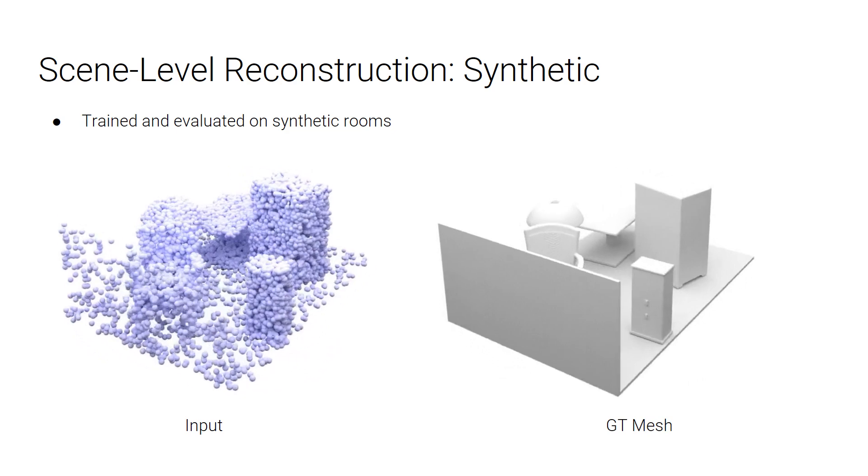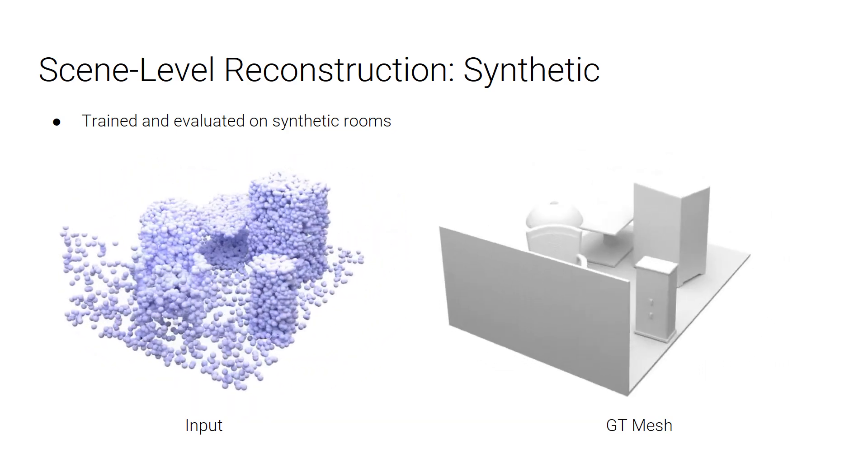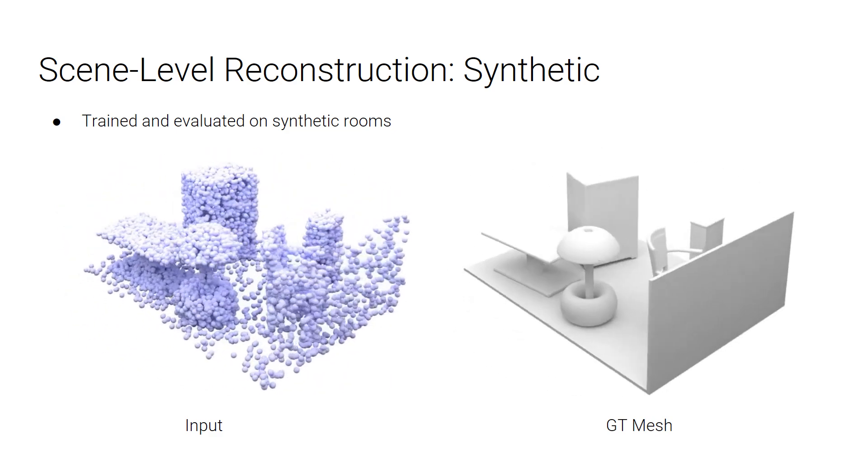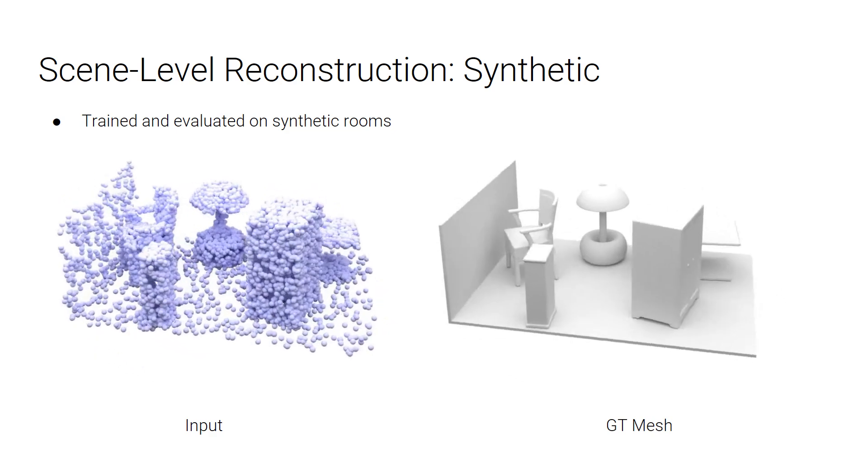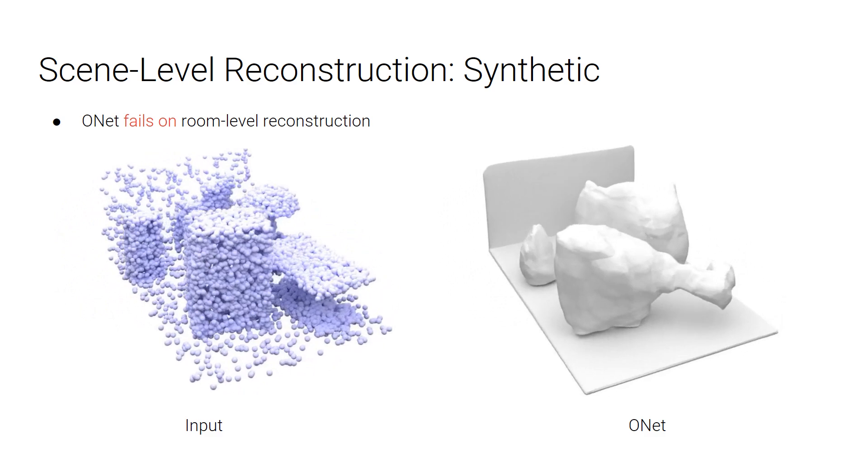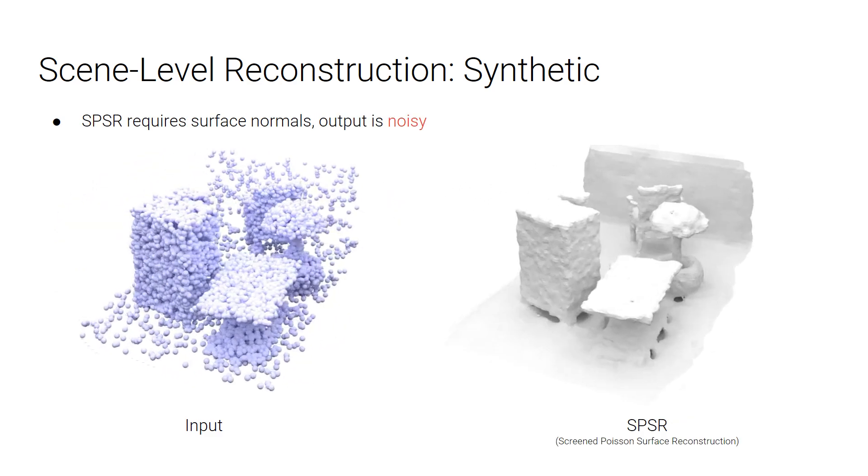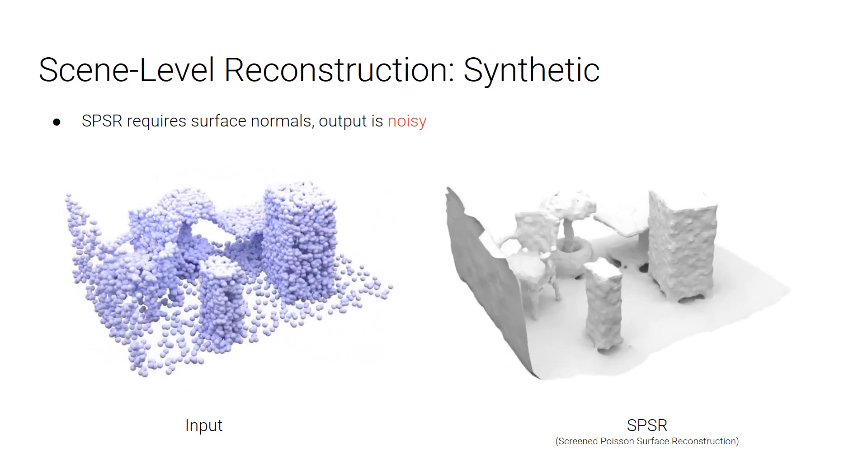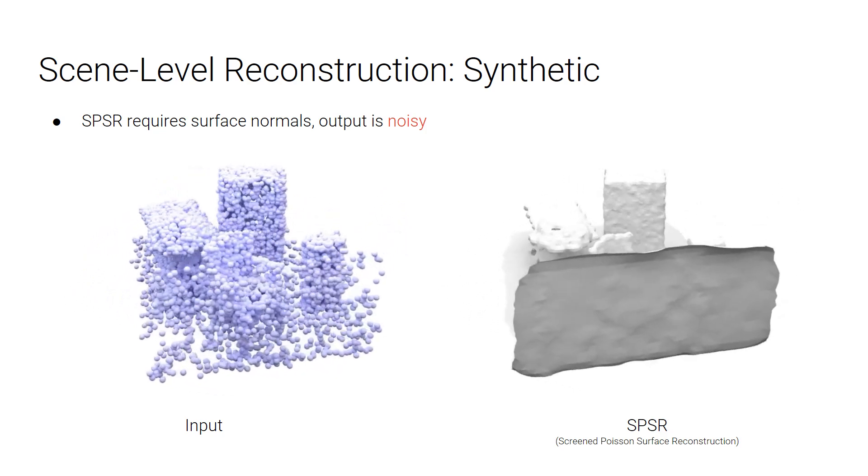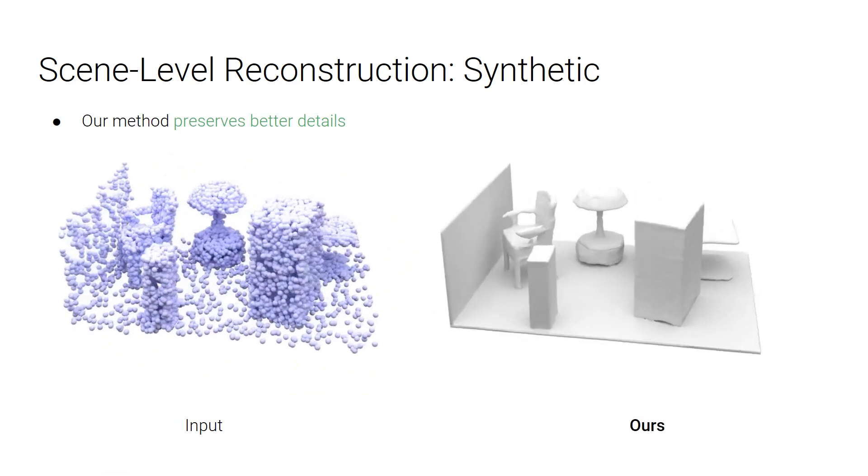Now, let's look at the results on scene level reconstruction. We first generate a synthetic room dataset using ShapeNet objects. We train and evaluate on this dataset, and the input is a noisy point cloud. We can see that the occupancy network produces smooth results, but fails on recovering details. The other baseline methods, Screened Poisson surface reconstruction leads to very noisy reconstructions, and our method produces detailed and smooth 3D reconstructions.